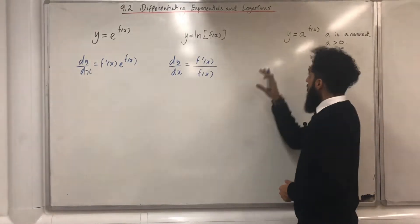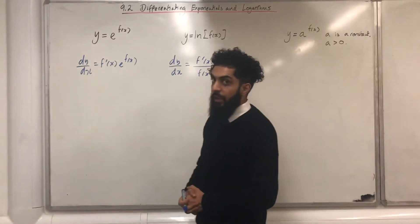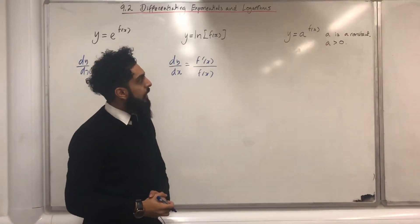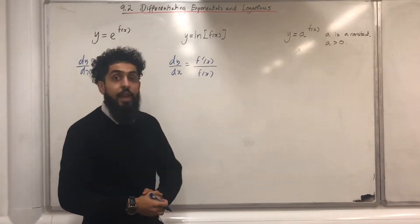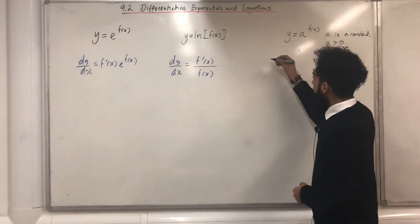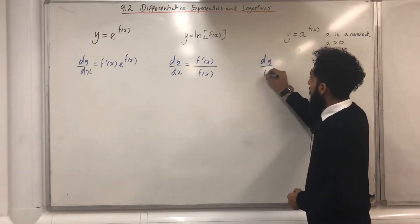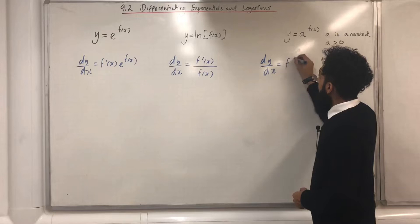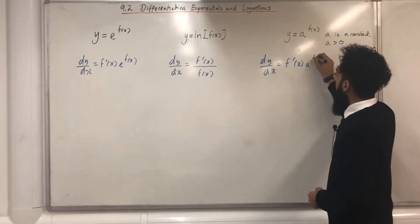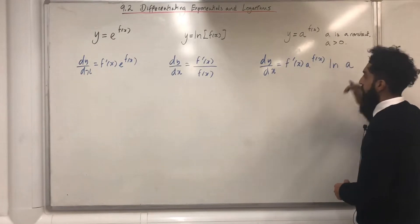For y equal a to the power f(x), where a is a constant such that a is greater than 0, dy/dx is given by f'(x) multiplied by a to the power f(x) multiplied by ln(a).